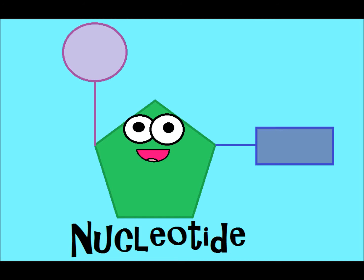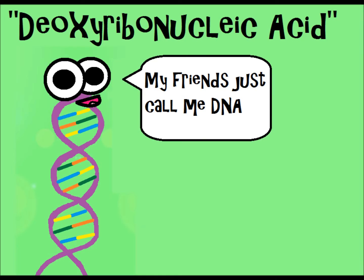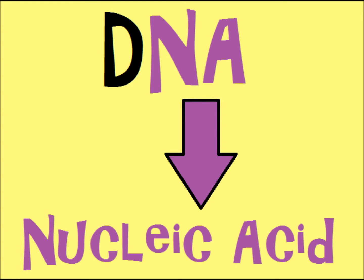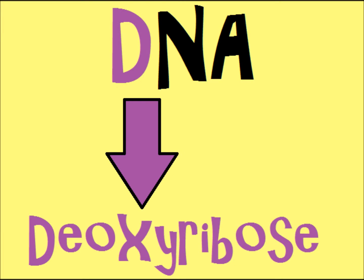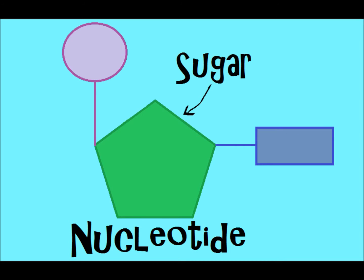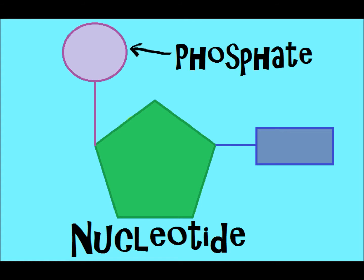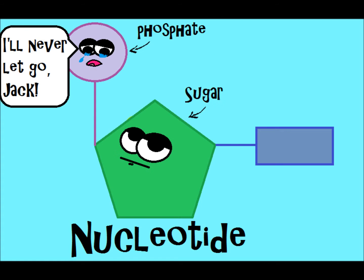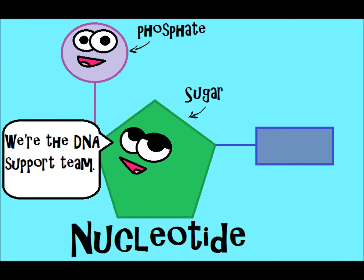DNA stands for deoxyribonucleic acid. The 'NA' part stands for nucleic acid, and the 'deoxyribo' refers to deoxyribose, which is a sugar. Nucleotides have three parts: a sugar called deoxyribose, a phosphate, and a base. The phosphate and sugar work together to hold the DNA structure together — we sometimes call this the sugar-phosphate backbone.